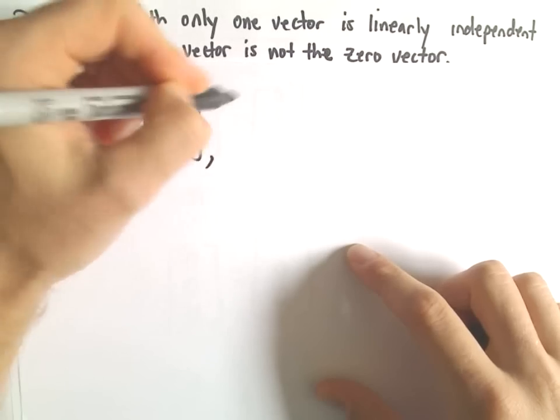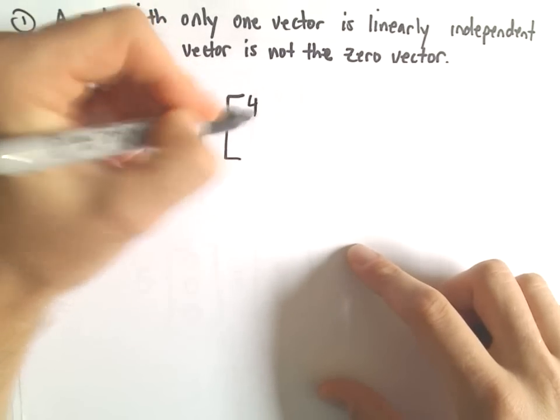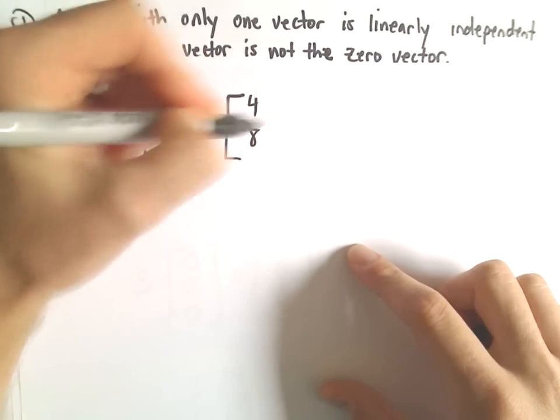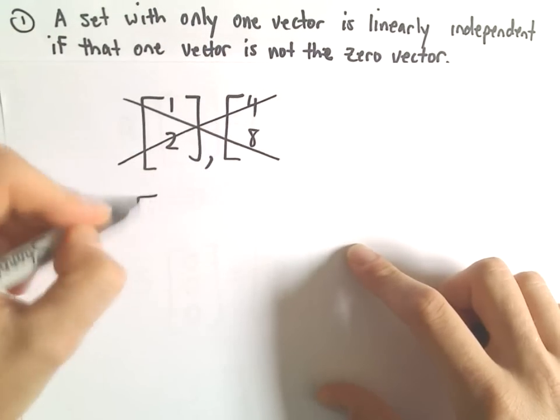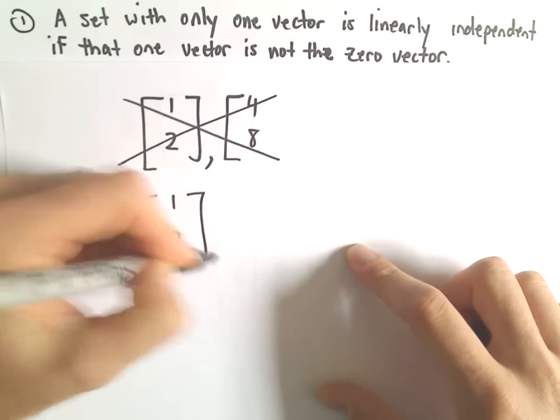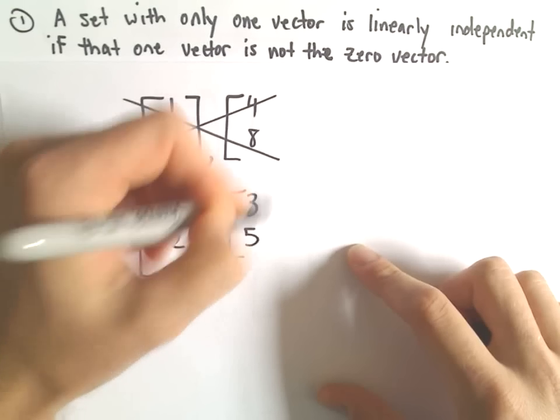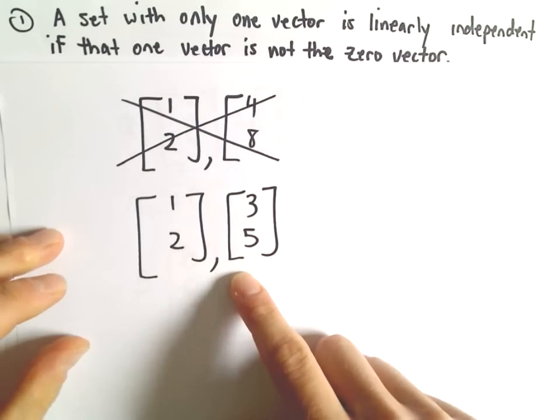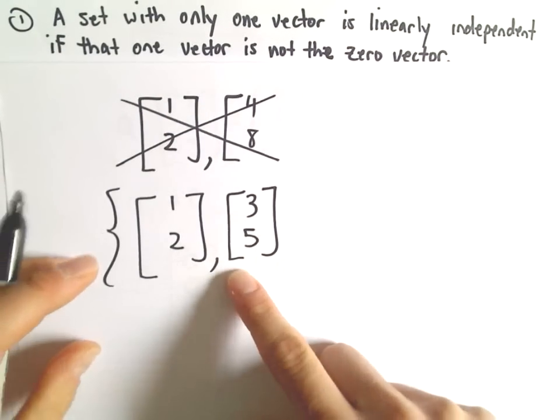suppose we've got 2×1 vectors. Whoops, I accidentally made them multiples of each other, didn't I? So, [1, 2] and [3, 5]. Right now, these are not multiples of each other, so this set would be linearly independent.